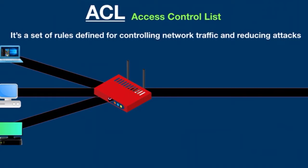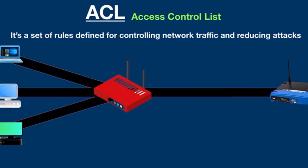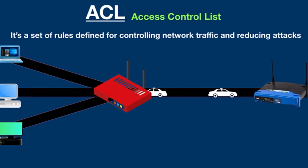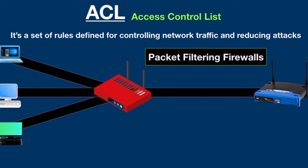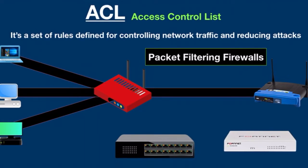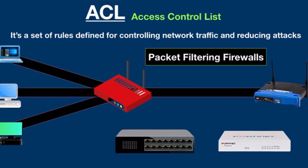The administrator decides what information can come in and go out of the network. These rules allow or deny specific traffic moving through the router. ACL is a layer 3 security that controls the flow of traffic from one router to another. It is also called a packet filtering firewall. ACL is configured on networking devices with packet filtering capabilities such as routers, switches, and firewalls, where they act as filters or network gateways managing which traffic can access the network.